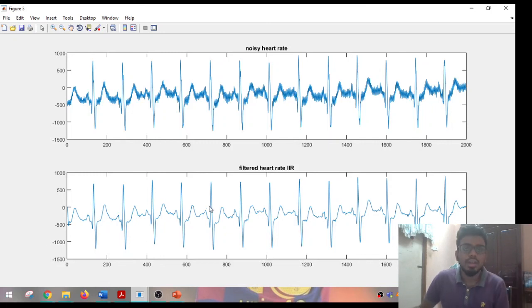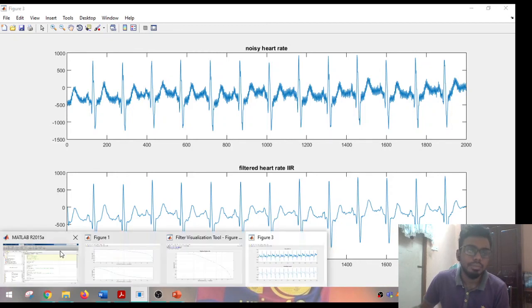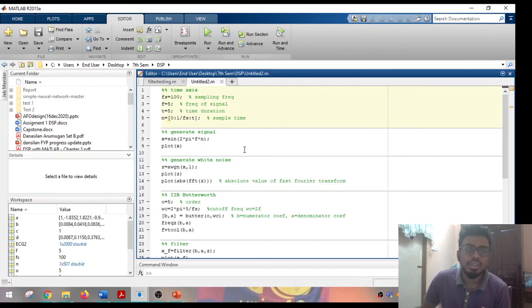So as a conclusion, to reduce the noise in a signal, we can use IIR Butterworth filter for our signal.